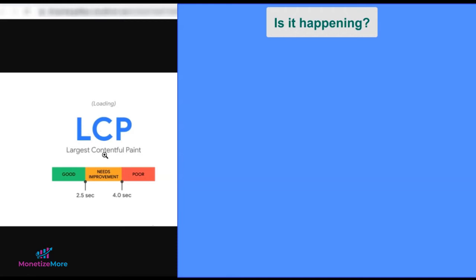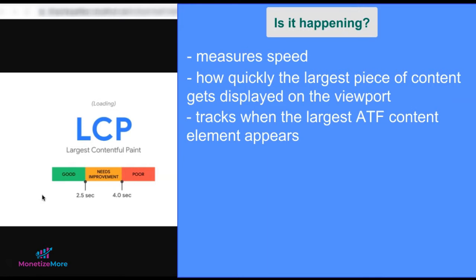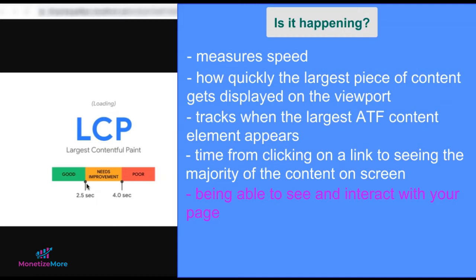What is LCP, or Largest Contentful Paint? It measures speed — how quickly the largest piece of content gets displayed on the viewport. It tracks when the largest above-the-fold content element appears, and is the time from clicking on a link to seeing the majority of the content on screen. A good LCP score is anything less than two and a half seconds; it's considered poor when it's more than four seconds, and needs improvement if it's somewhere in between.